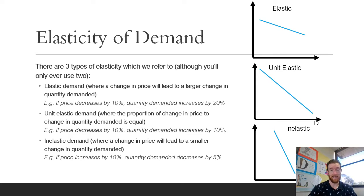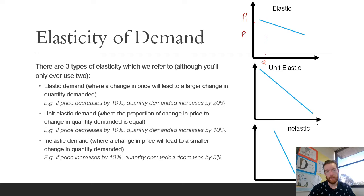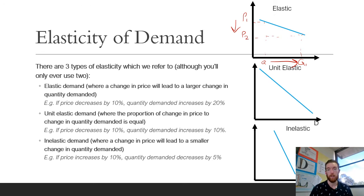There are three types of elasticity we refer to, although realistically in questions you're only really going to be asked about elastic and inelastic. Elastic demand is where a change in price will lead to a larger change in quantity demanded. If we have two different prices — P1 and P2 — you can see there is a gigantic change in quantity demanded despite only a small change in price. For example, if price decreases by 10%, quantity demanded increases by 20%.